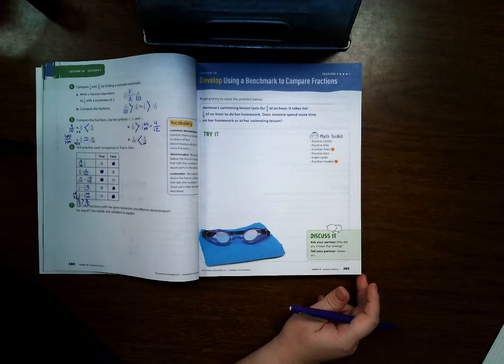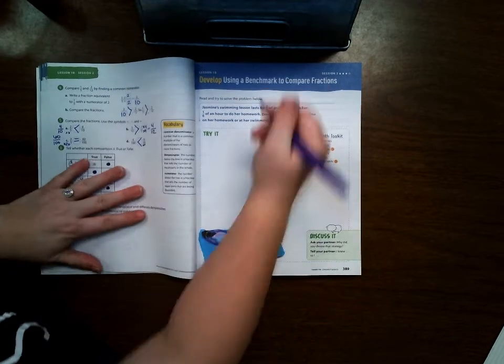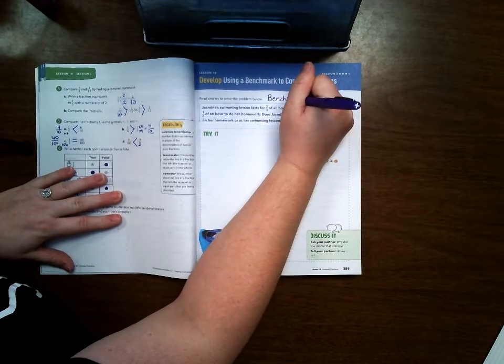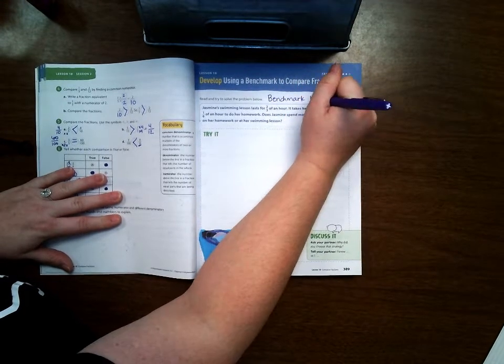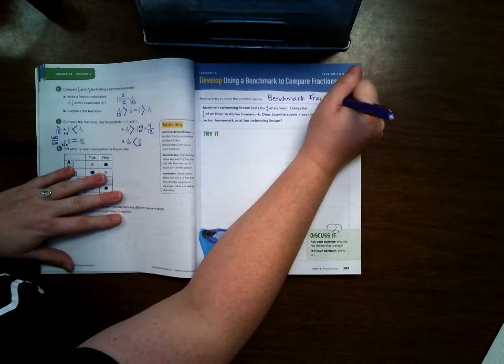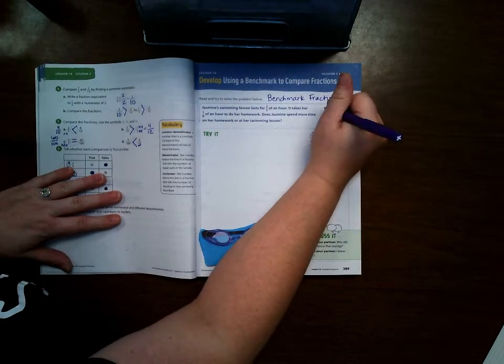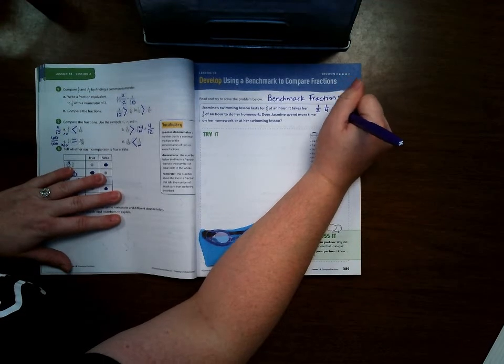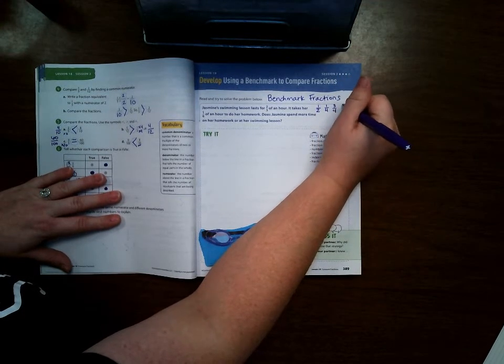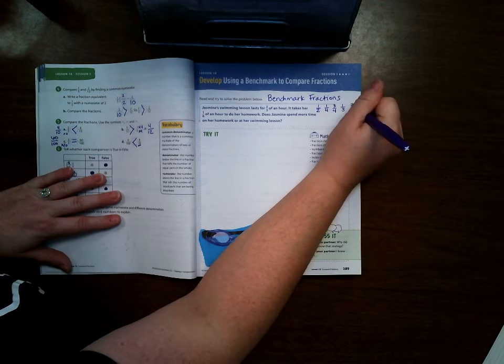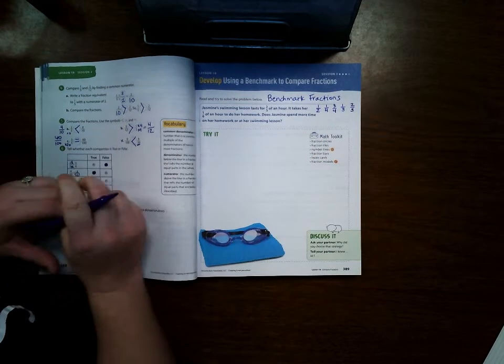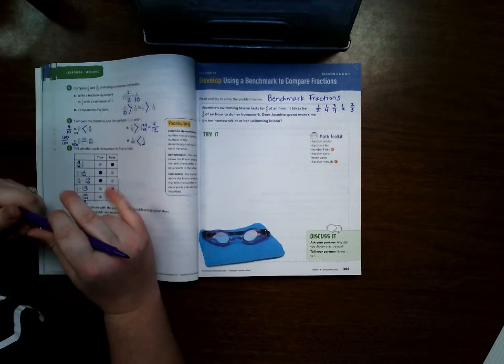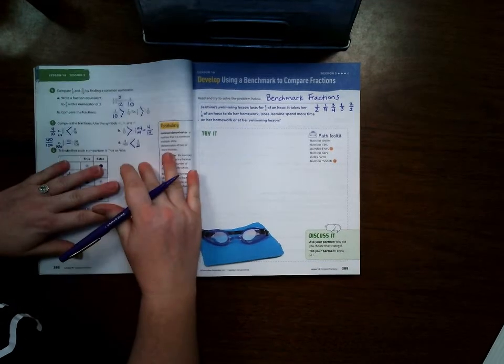Okay, first let's talk about benchmark fractions. Benchmark fractions are commonly known fractions. Those fractions would be one-half, one-fourth, three-fourths, one-third, and two-thirds. These fractions are ones that just easily help you know how big something is.